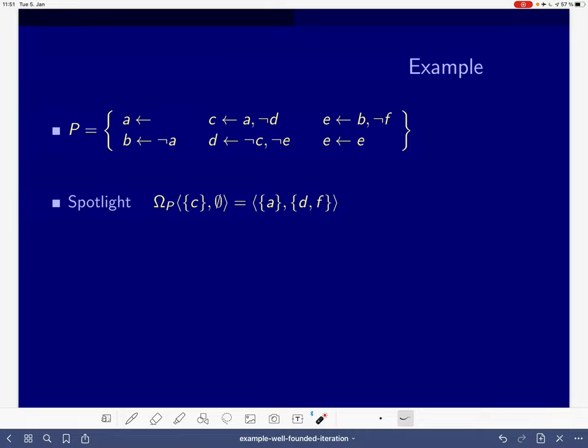The first thing we will be looking at is how the true atoms are determined. This is something you already know from the fitting operator, but let's look at it again. A is a fact, there are no conditions necessary, so obviously A belongs to the set of true atoms of the result. What about the others? Keep in mind we only know that C is true, but we know about no atoms that have been determined to be false so far.